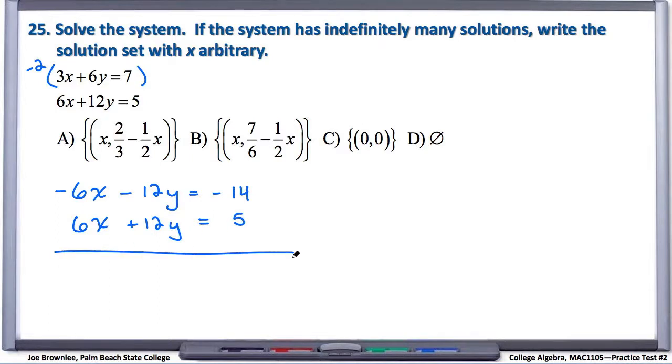And we know we're going to add vertically, so negative 6x plus 6x goes away. Negative 12y plus 12y goes away. And so on the left hand side we have 0 equals, and negative 14 plus 5 is negative 9.